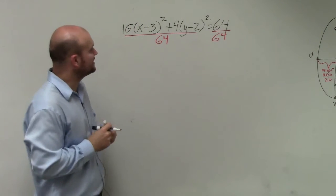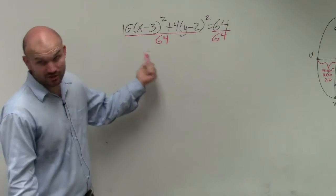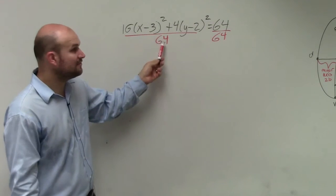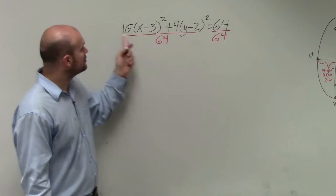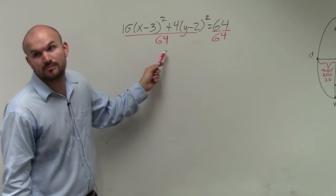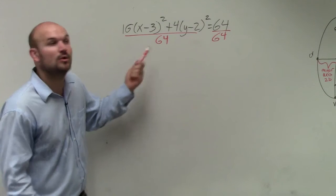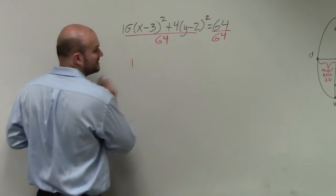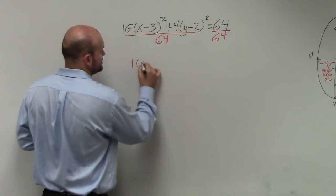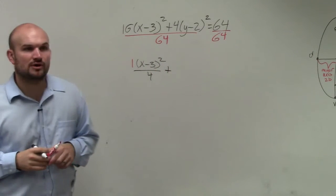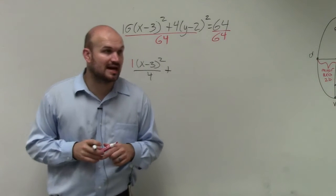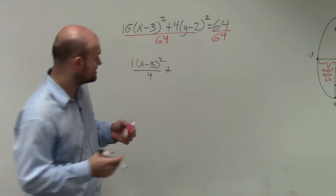The reason that's important is because the 64 divides into this expression and that expression. So 16 over 64 can be reduced down to 1/4, and 4 over 64 can be reduced down to 1/16.